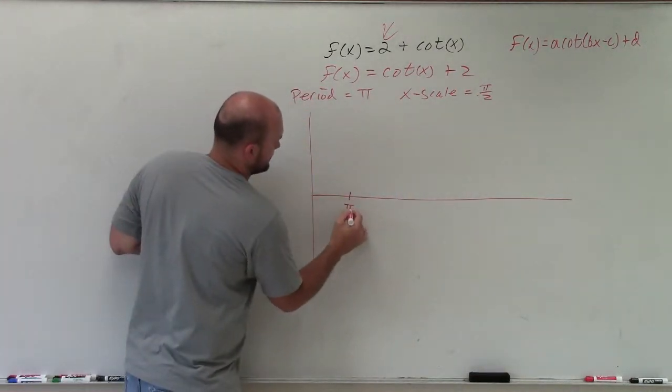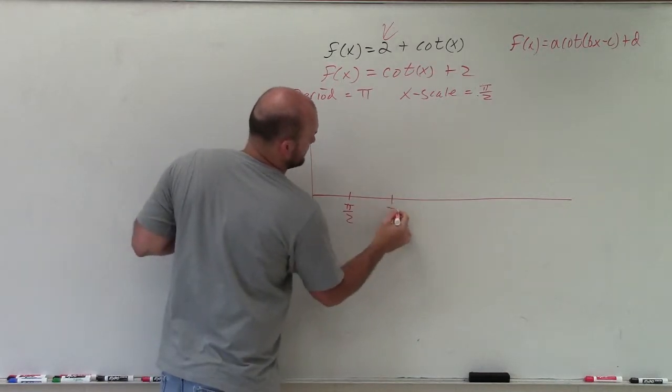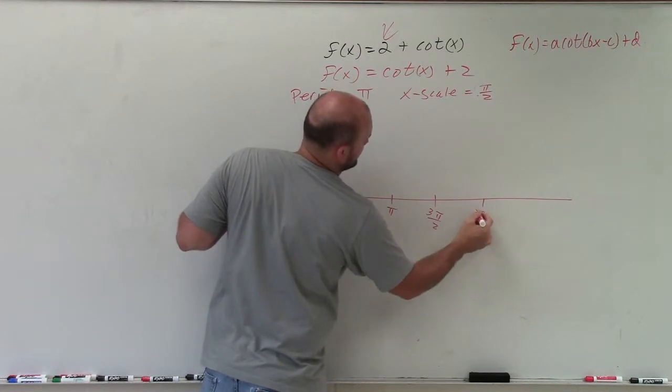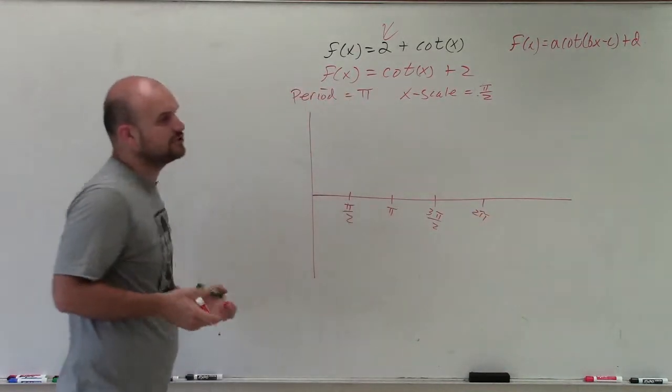So I just go over π/2, another π/2 which would be π, another π/2 which would be 3π/2, and another π/2 which would be 2π. That would be enough for two periods.